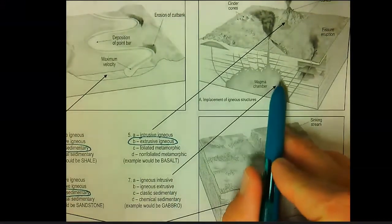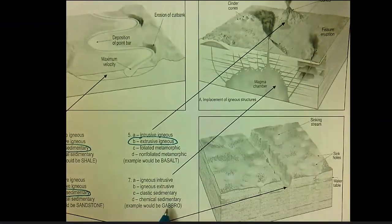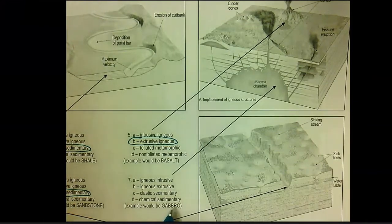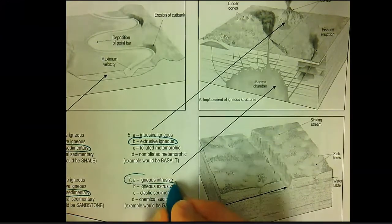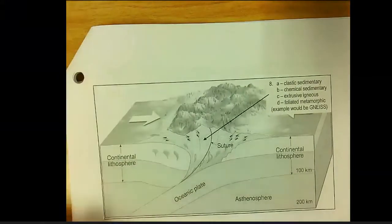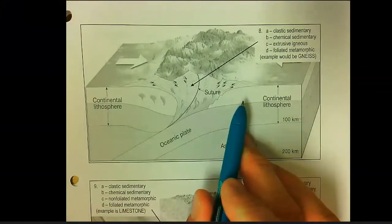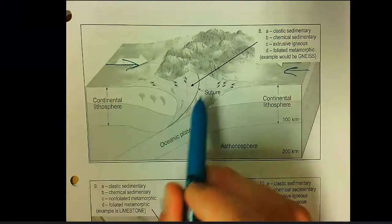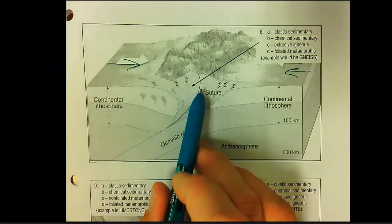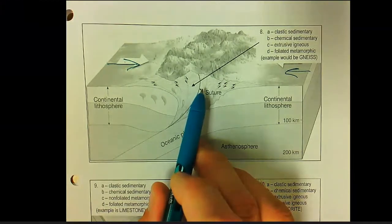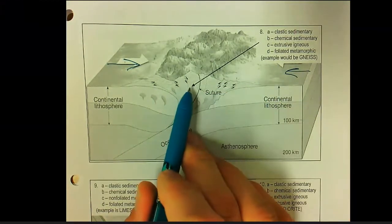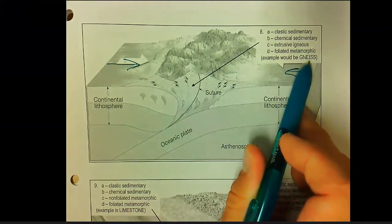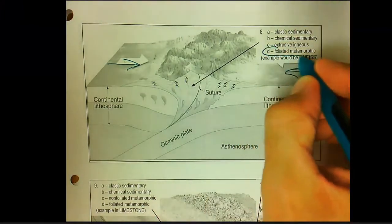Back to number seven, pointing to the magma chamber deep underground fueling volcanoes — example would be gabbro, forming large crystals underground. That's igneous intrusive. Number eight points to a tectonic region where one plate is being subducted under another with intense pressures — example would be gneiss, high-grade change — that's foliated metamorphic.